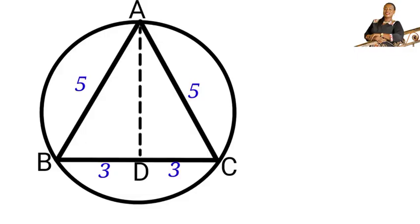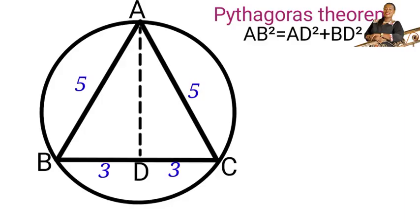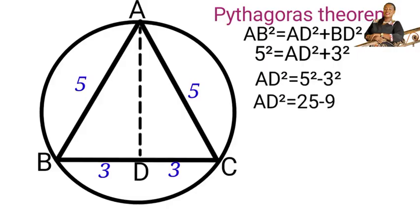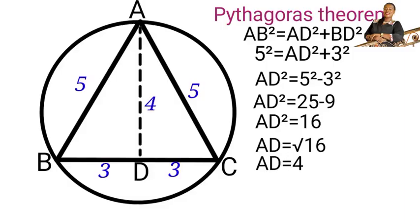So AB squared equals AD squared plus BD squared. AB squared is five squared equals AD squared plus three squared. So AD squared would be equal to five squared minus three squared. AD squared equals 25 minus 9. AD squared equals 16. AD will be equal to the square root of 16. AD equals four.